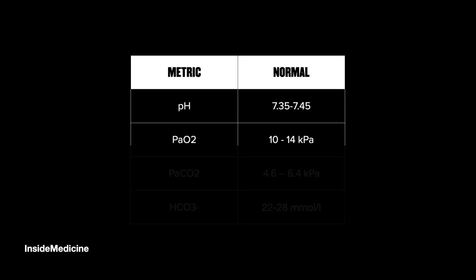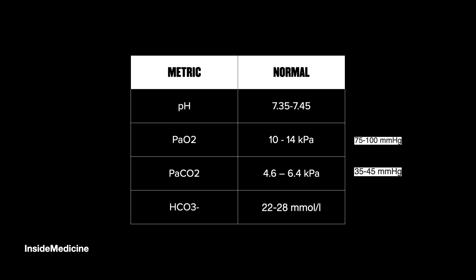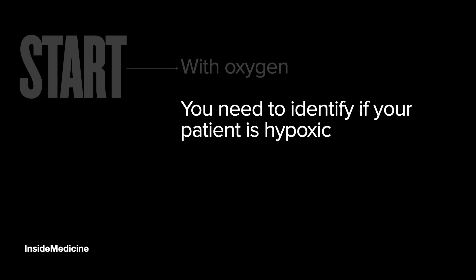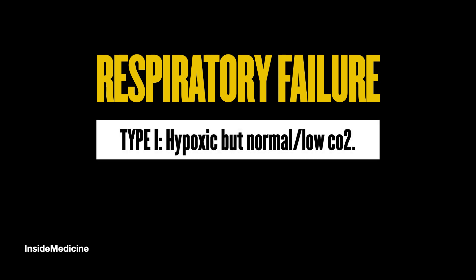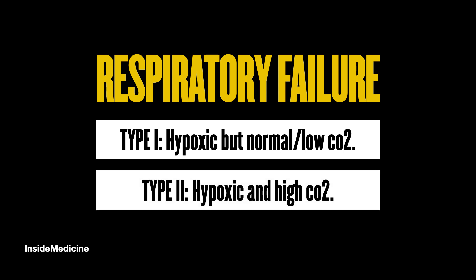When you're looking at an ABG, you're going to see pH, PaO2, PaCO2, and bicarbonate. Starting with oxygen, you need to know whether or not your patient is hypoxic, and if they are, that means they're in respiratory failure. This is divided into two types: Type 1, where the patient is hypoxic but not retaining CO2 (PaCO2 is low or normal), and Type 2, where they're hypoxic and retaining CO2.